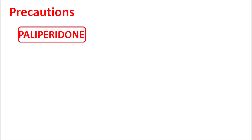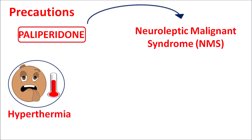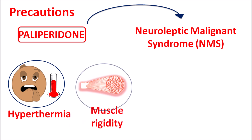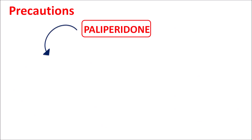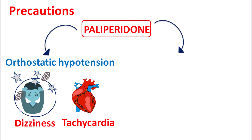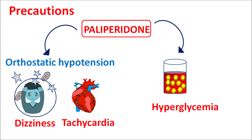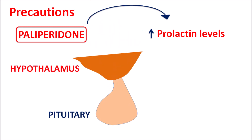Like other antipsychotics, paliperidone can precipitate neuroleptic malignant syndrome (NMS), characterized by hyperthermia, muscle rigidity, tachycardia, and confusion. This drug can also produce orthostatic hypotension by blocking alpha-1 receptors, causing dizziness and tachycardia. Additionally, it can increase glucose levels, resulting in hyperglycemia — particularly important in patients with diabetes mellitus.